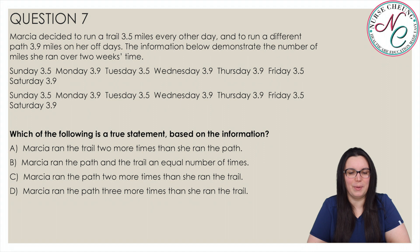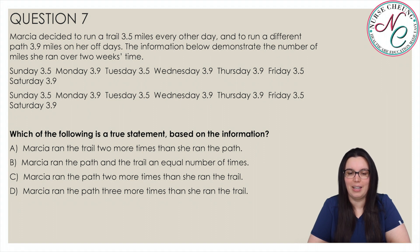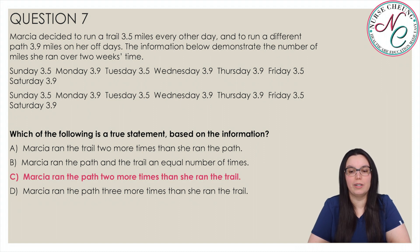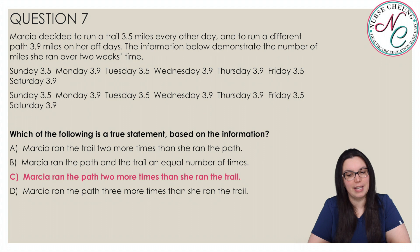Using the same example, which of the following is a true statement based on the information? The correct answer is C: Marcia ran the path 2 more times than she ran the trail. The information demonstrates that Marcia ran the path 8 times and the trail 6 times. Therefore, she ran the path 2 more times than she ran the trail.